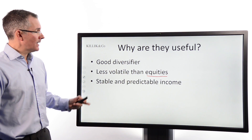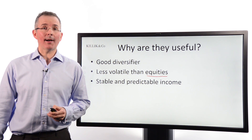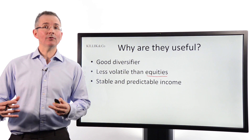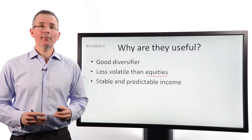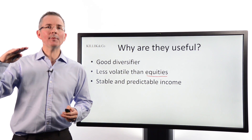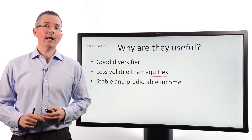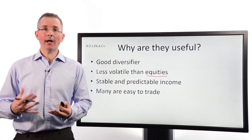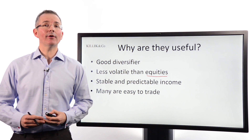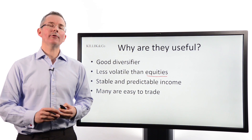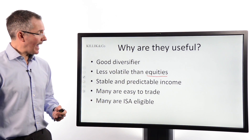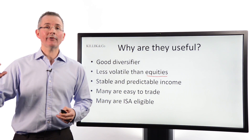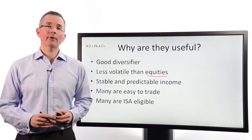Fixed income securities offer stable and predictable income. You can get income from equities too, but directors decide dividend amounts and they can be suddenly cut or changed — that's much less of a risk with fixed income securities. The coupon stream tends to be steady and even, and unless the issuer goes bust, you're quite likely to receive it over the term of the bond. Many are easy to trade through a broker, similar to stocks and shares. And many are ISA eligible, meaning you can shelter them in an individual savings account from both income tax and capital gains tax.